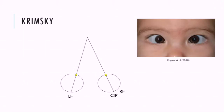With the Krimsky, what we do is look at the corneal reflection of the patient and utilise prisms to centralise that corneal reflection. So if we take a look at the patient here to the right, we can see that they have a right esotropia and that the corneal reflection is sitting here on the margin of the pupil. What we want to do is utilise prisms to bring that corneal reflection back into the correct position, which is slightly nasal from the centre.